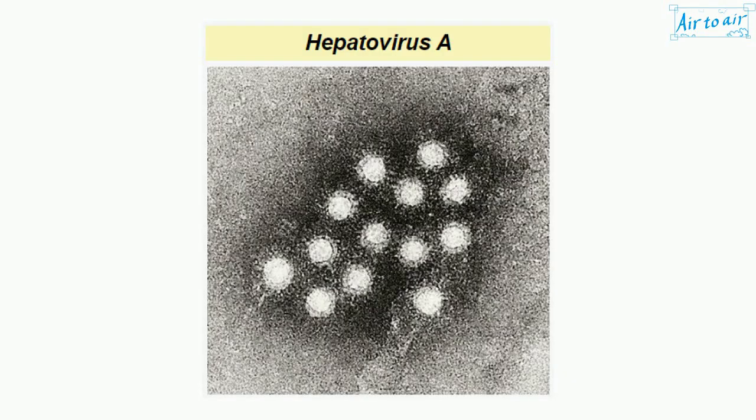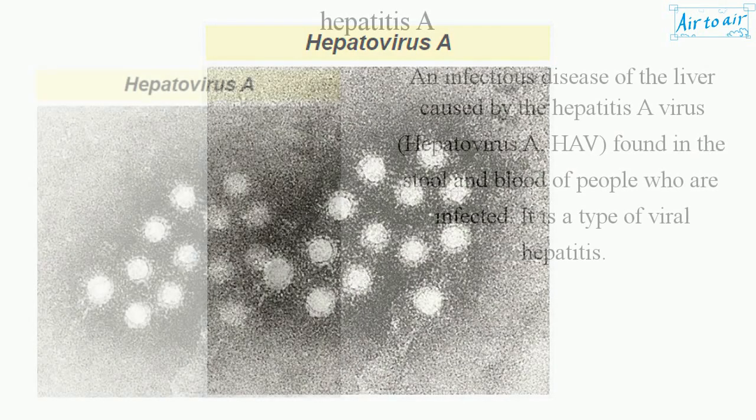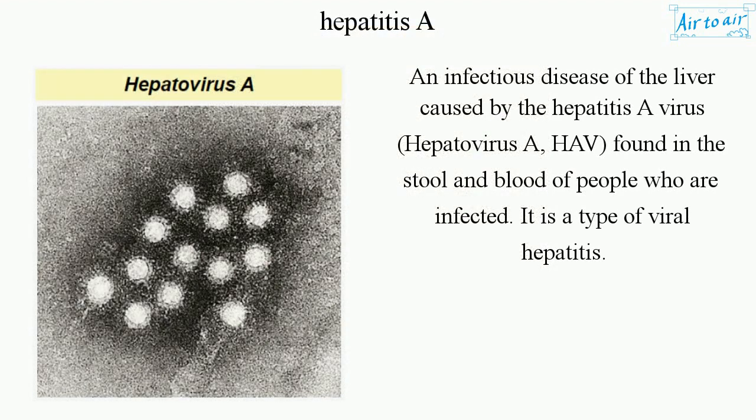Hepatitis A is an infectious disease of the liver caused by the hepatitis A virus, hepatovirus A (HAV), found in the stool and blood of people who are infected. It is a type of viral hepatitis.